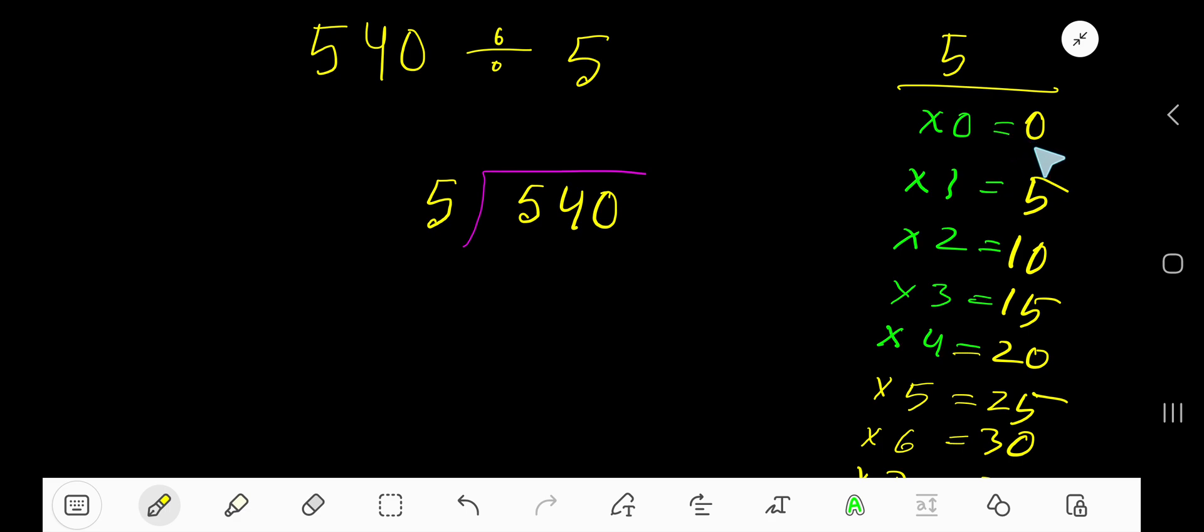Just add 5 with the previous step: 0 plus 5 is 5, 5 plus 5 is 10, like this. So 5 goes into 5 how many times? 5 goes into 5 one time. 1 times 5 is 5, subtract, you are getting 0.